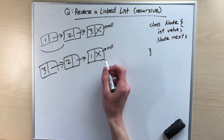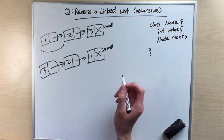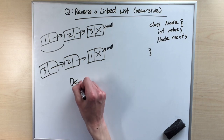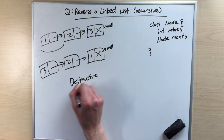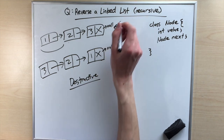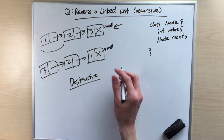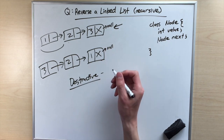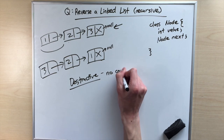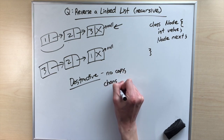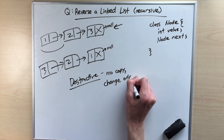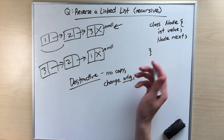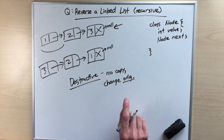Going back to our problem, we want to reverse this linked list recursively. The approach we're going to take is going to be destructive, meaning when they give us a linked list, we aren't going to make a copy of it. Instead, we're going to edit the original linked list and make it look like the linked list that we want. Destructive pretty much means no copy — we're going to change the original. Let's get into the implementation.